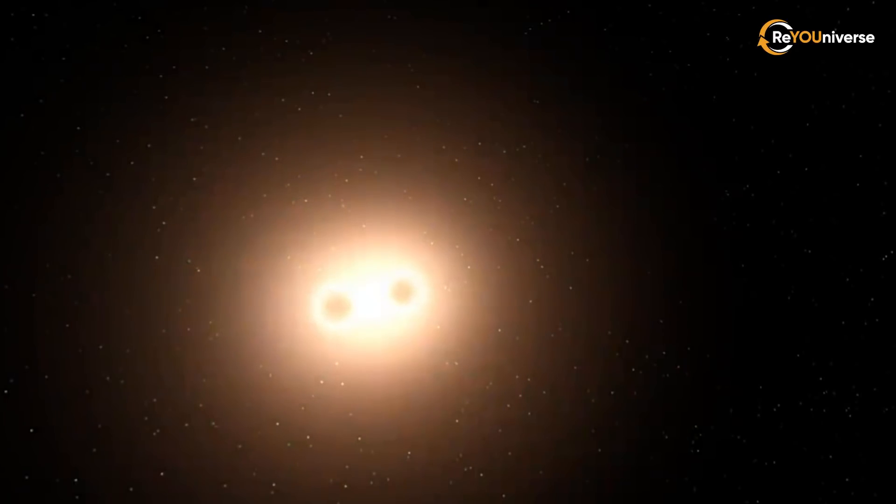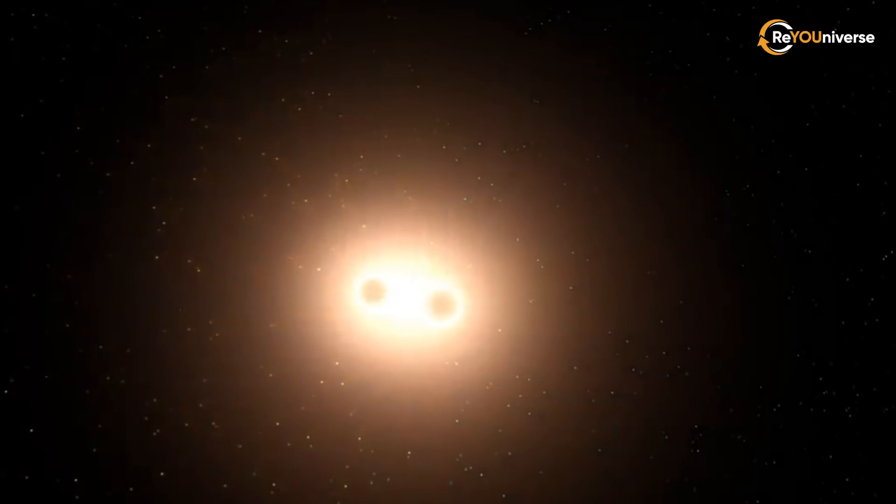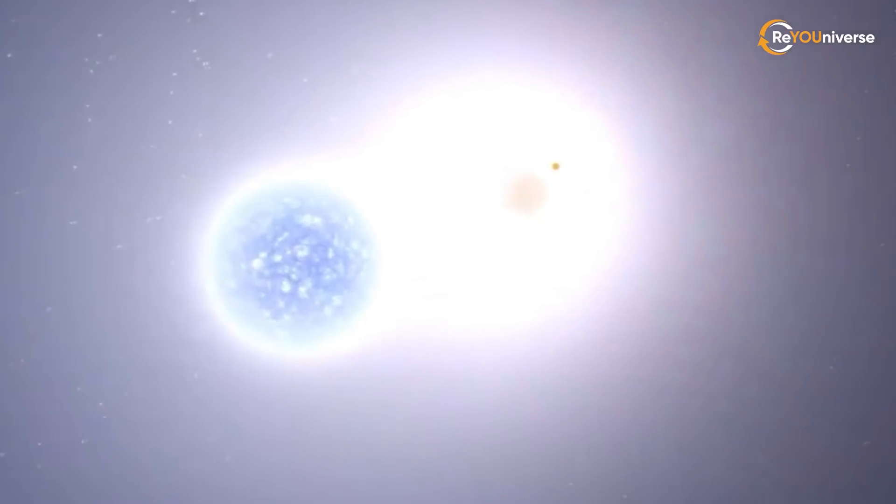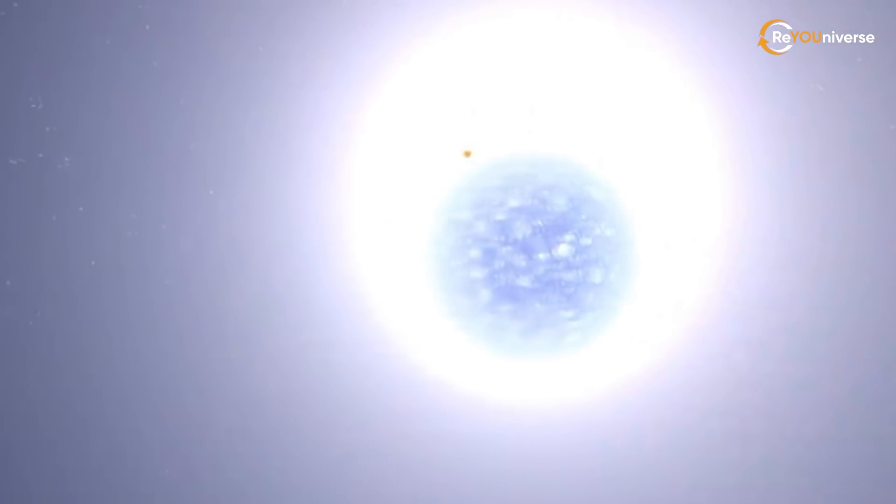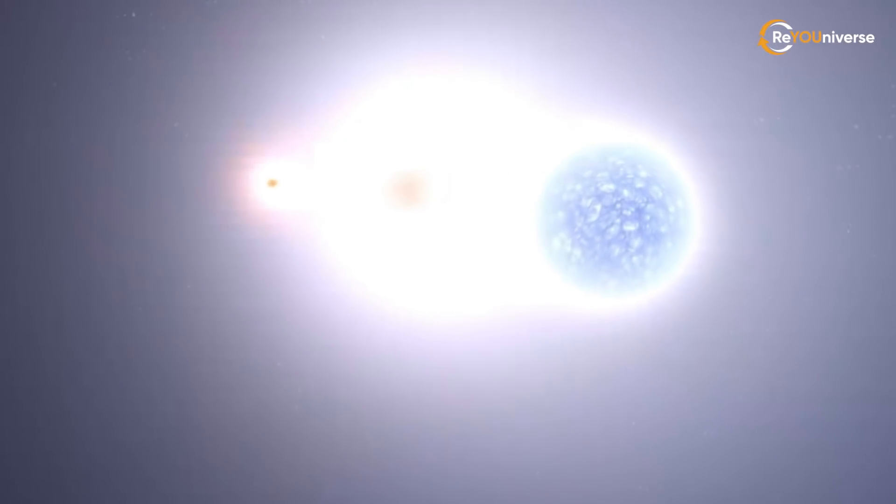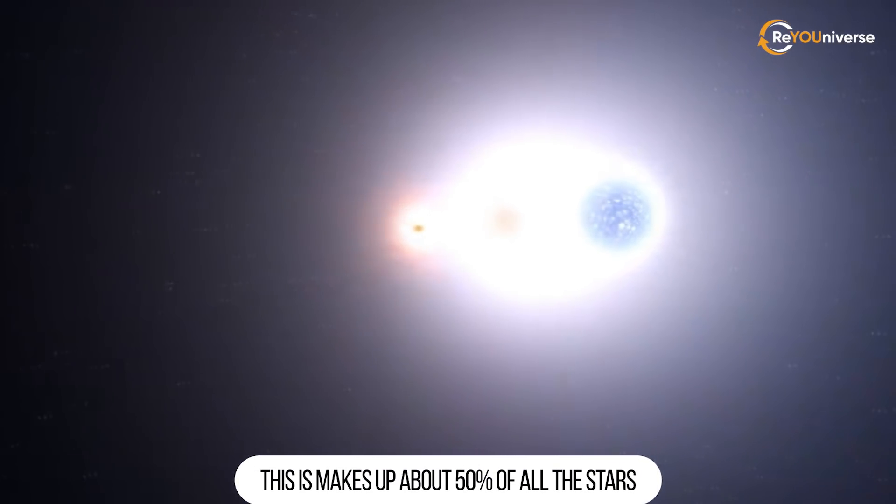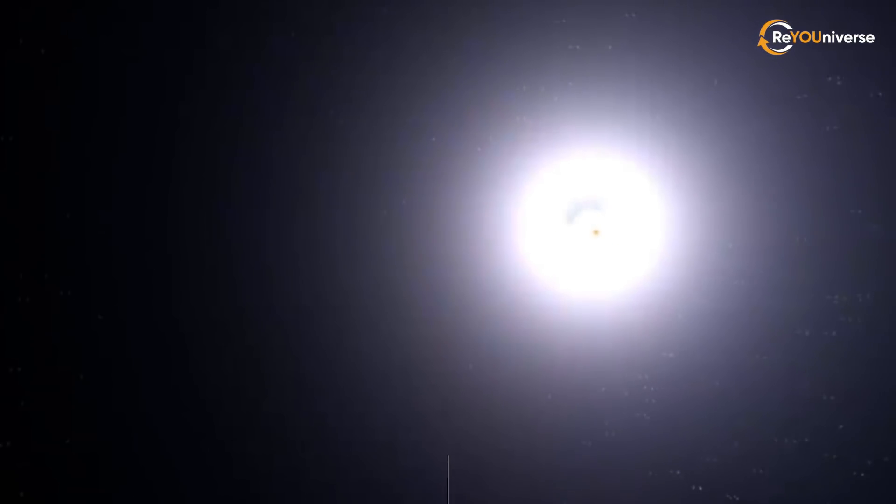Binary stars are systems of two stars orbiting each other. They form a double star system. This phenomenon is much more common than you might think, looking up at the starry sky. Scientists claim that every second star is in a binary or multiple star system. This makes up about 50% of all the stars visible with the naked eye.